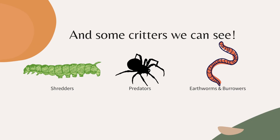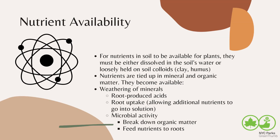There are bigger critters too, of course, that we can see. These also help recycle nutrients, making them available to plants through their waste. For nutrients to be available for plants, they must be either dissolved in the soil's water — and there has to be enough water present to hold the nutrients — or they need to be held loosely on soil colloids, which are the super tiny particles: the clay and the humus.